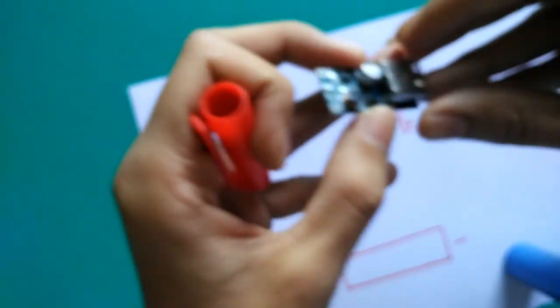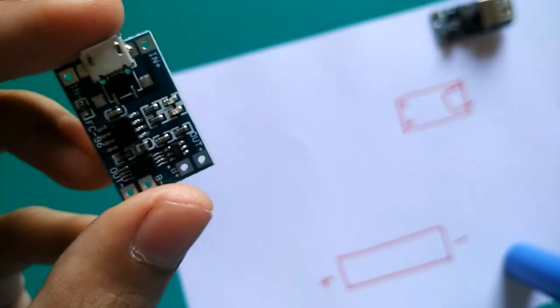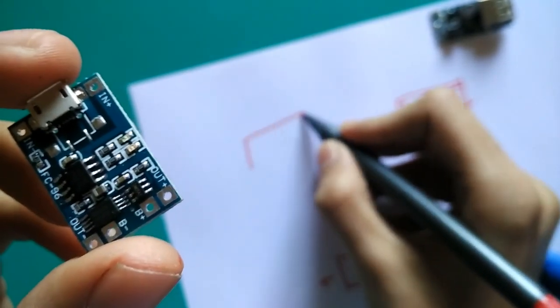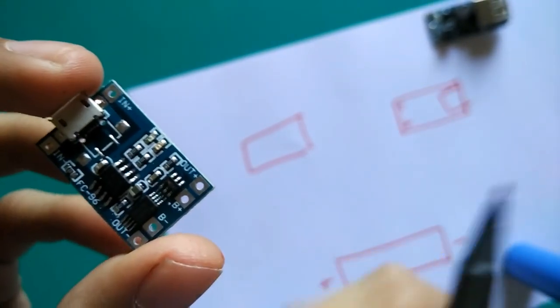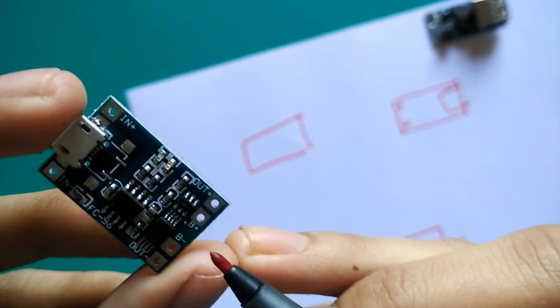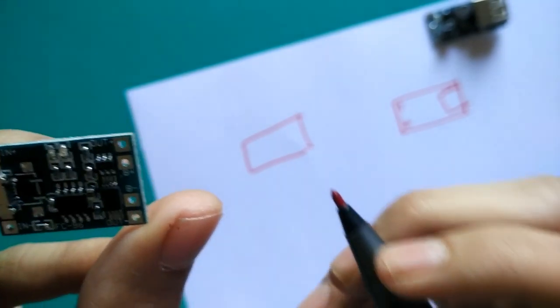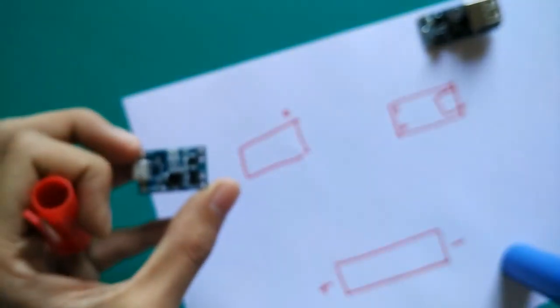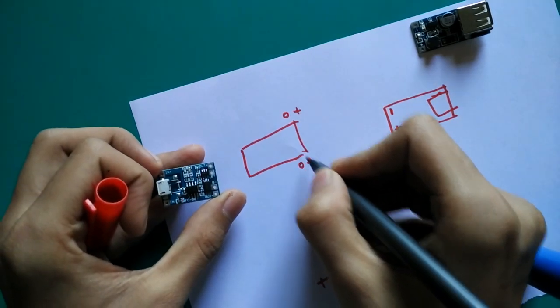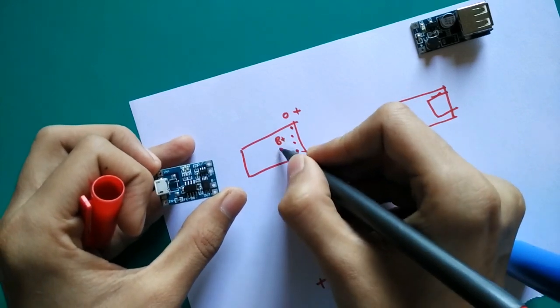Here we can charge our power bank. So we draw our boost module. You can see there are four output terminals: B plus, B minus, output minus and output plus. So let's draw it - output plus, output minus, this is battery plus and battery minus.